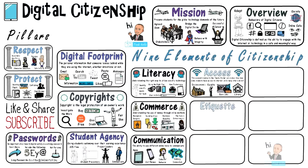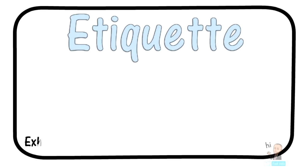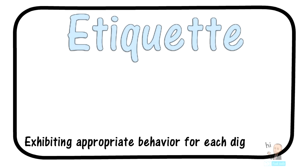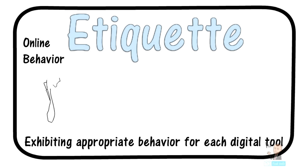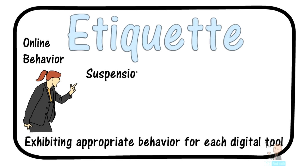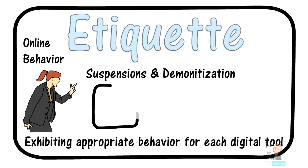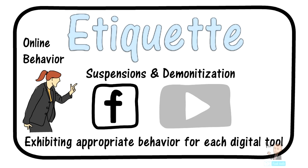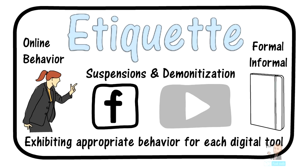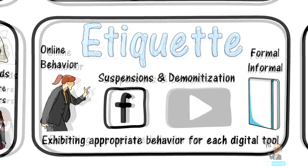The next element is etiquette, defined as digital citizens exhibiting appropriate behavior for each digital tool. The guidelines for online behavior are pretty much the same: simply treat others on the internet the same way you want to be treated. The dangers of inappropriate online behavior include suspensions and demonetization. Many social media platforms including Facebook and Twitter will suspend you, and YouTubers can be demonetized just the same. You also need to understand that at certain times it makes sense to use formal language when writing, and other times it's okay to use informal language.